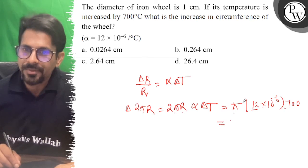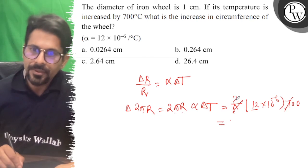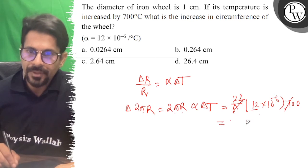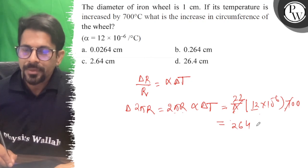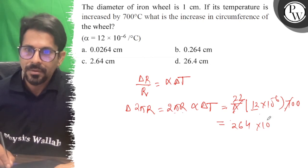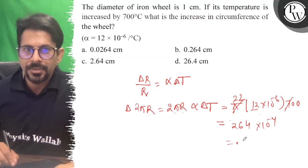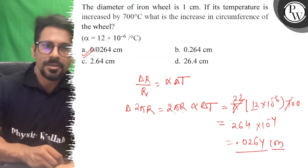...22 by 7 is 22. You get 24, 4 occurring, 24 to 264 into 10 power minus 4. So you get 0.0264 centimeter. So the right answer is a. All the best.